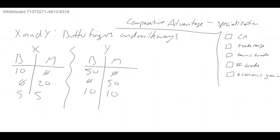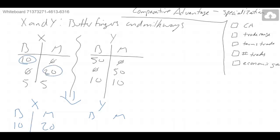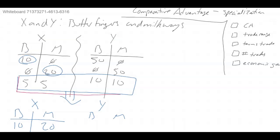I'm going to pull this into a table. We're going to have X and Y, Butterfingers and Milky Ways. I'm just going to take these specialized numbers: 10 Butterfingers and 20 Milky Ways for X, and 50 Butterfingers and 50 Milky Ways for Y. I'm going to come back to fill in a row in red later so we can remember what we're missing out on.